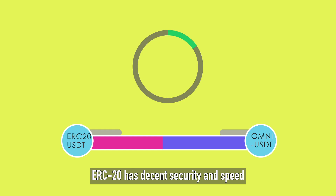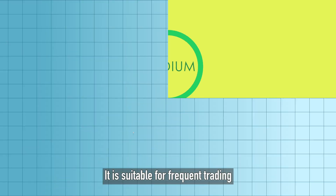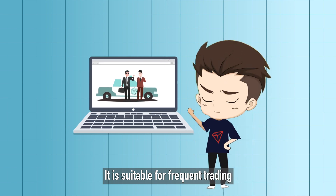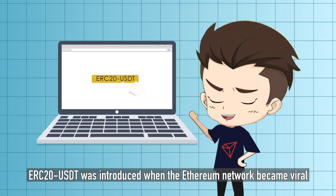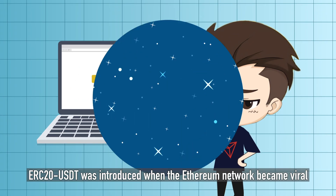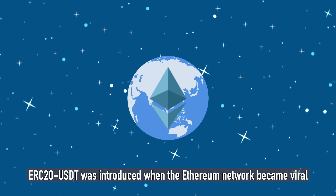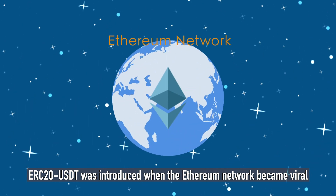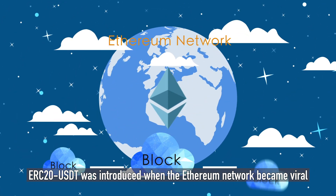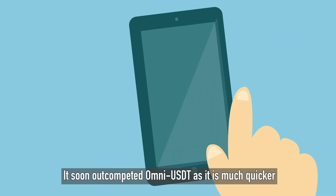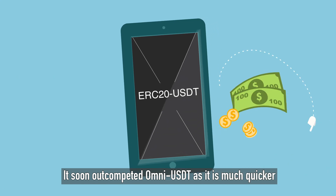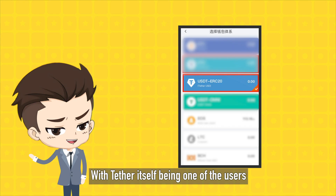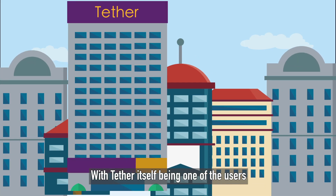ERC-20 has decent security and speed, and is suitable for frequent trading, especially for short-term trading. ERC-20 was introduced when the Ethereum network became viral, and it soon outcompeted Omni USDT as it is much quicker, with Tether itself being one of the users.